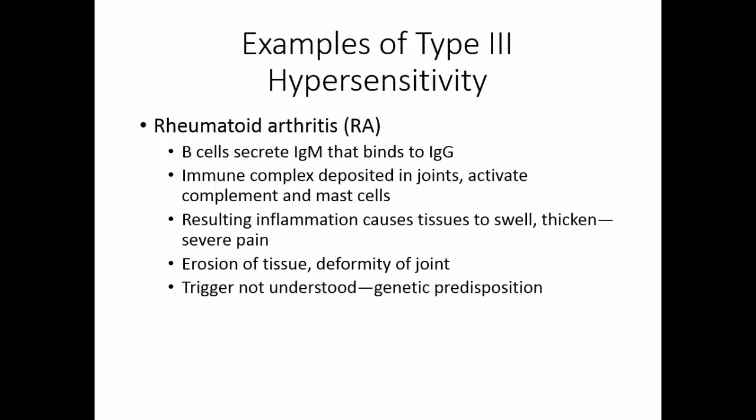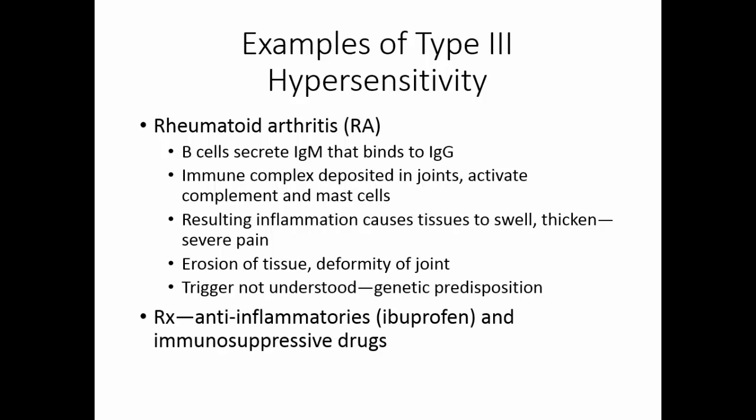We don't know the trigger for rheumatoid arthritis. There may be a genetic predisposition. The treatment is anti-inflammatory drugs like ibuprofen and immunosuppressive drugs.